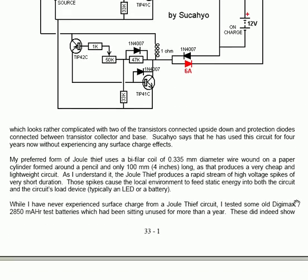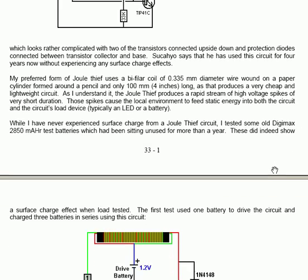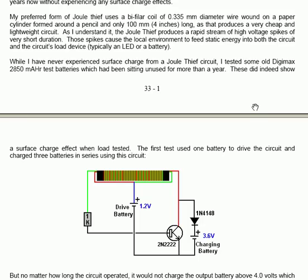My preferred form of Joule Thief uses a bifilar coil of 0.335mm diameter wire wound on a paper cylinder formed around a pencil. And that cylinder is only 100mm long. And that produces a very cheap and lightweight circuit. As I understand it, the Joule Thief produces a rapid stream of high voltage spikes of very short duration. These spikes cause the local environment to feed static energy into both the circuit and the circuit's load device, which is typically a light emitting diode or a battery.